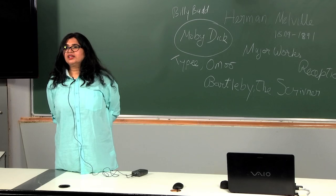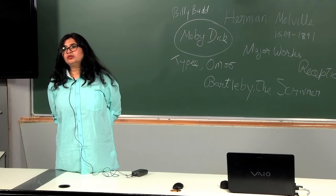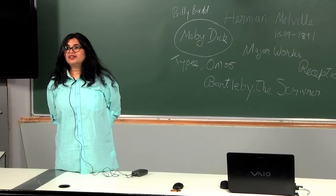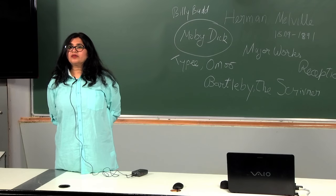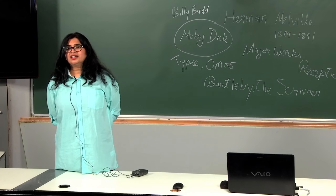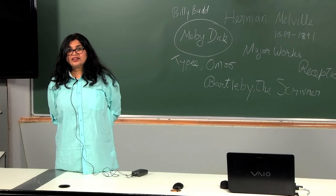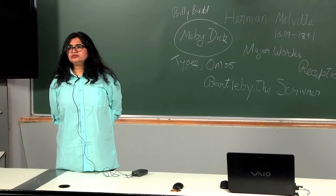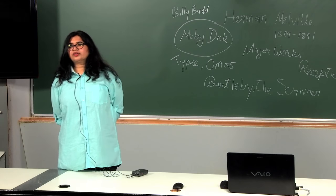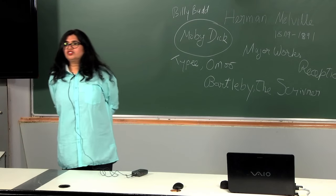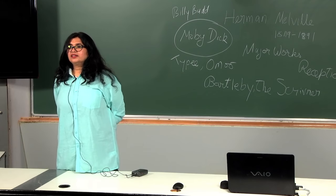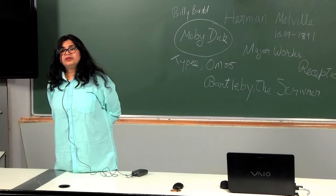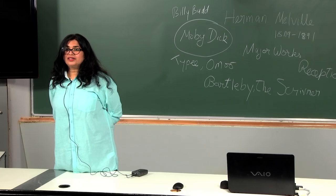For example, in Bartleby the Scrivener, he combines pathos and humor to create an unforgettable tale or fable where the stubbornness of an insignificant person can be read as an act of existentialism. And then he writes in his another story, Poor Man's Pudding and Rich Man's Crumbs, they are companion pieces that reflect on the contradictions of human behavior and ambivalences.